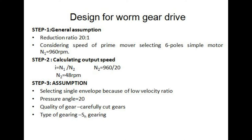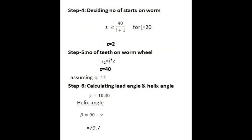Step 3: Assumption based on worm gear. Selecting single envelope because of low velocity ratio. Pressure angle equals 20 degrees. Quality of gear is carefully cut gears. Type of gearing is ascent gearing.